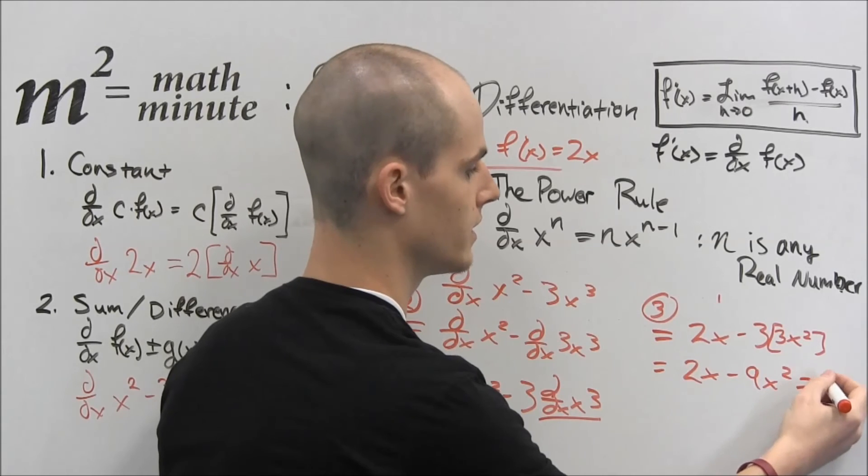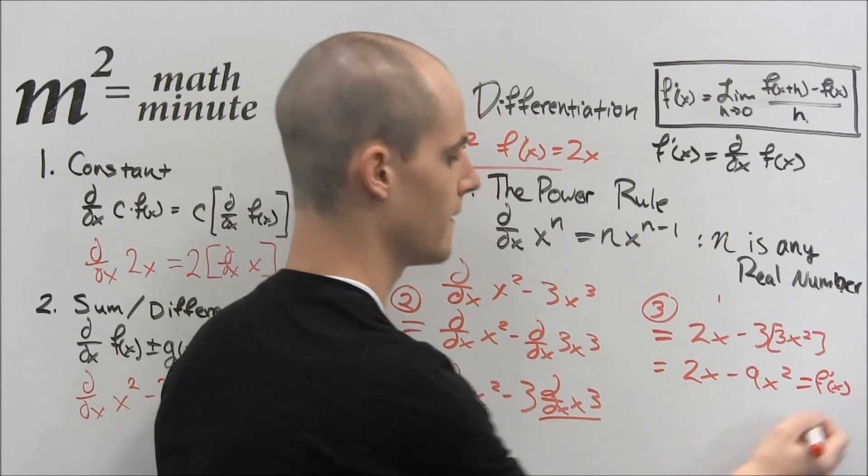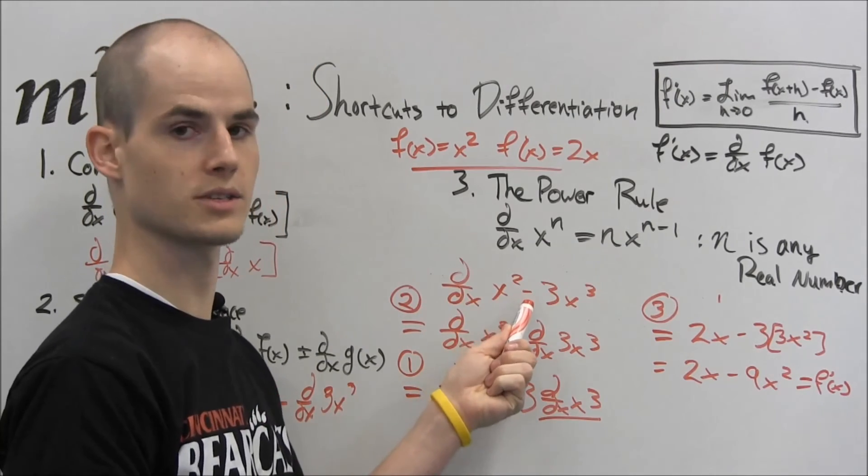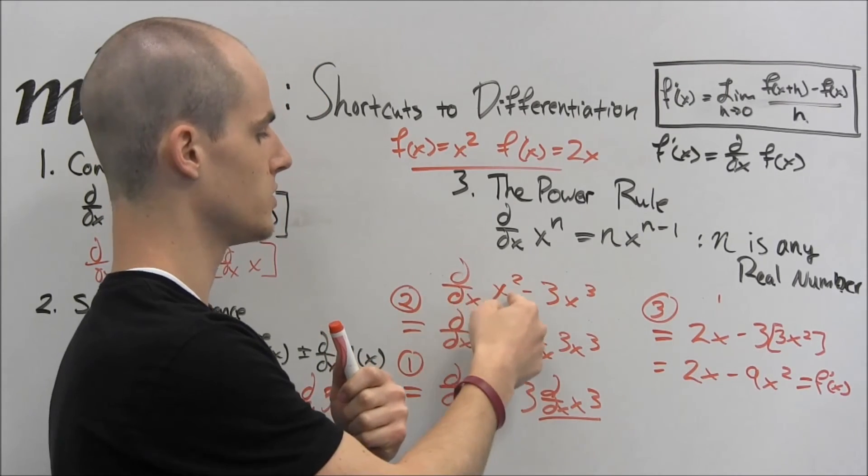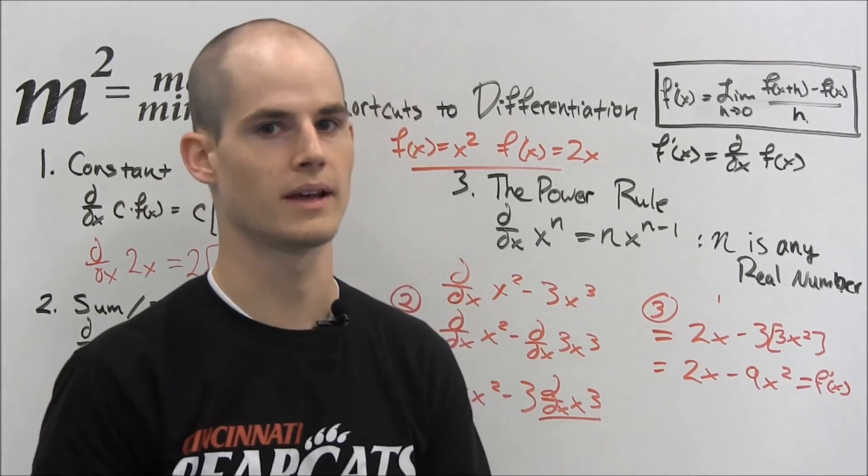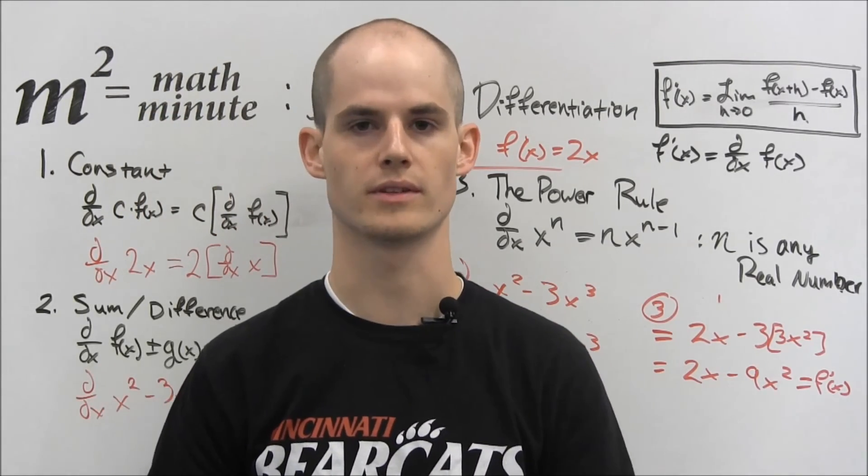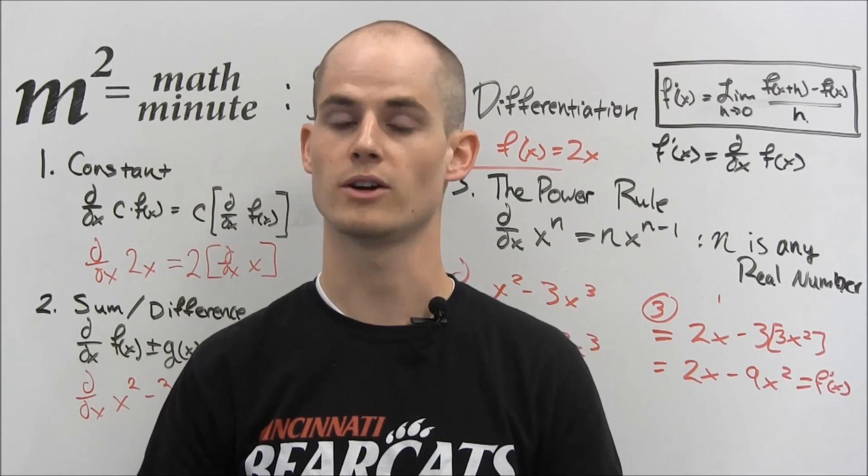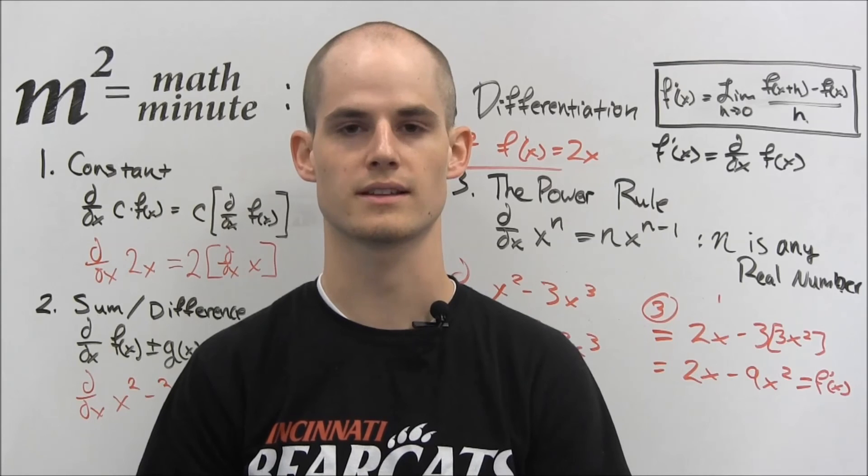So the final solution says that if f of x is x squared minus 3x cubed, then the derivative, f prime of x equals 2x minus 9x squared. And very soon you'll be able to look at this and just apply all those rules quickly. 2x minus 9x squared. So this is a really helpful method. This is just the first part of some of the derivative laws. And we'll get to the more difficult ones in the upcoming videos. But we hope this has been a good base for this and we'll see you next time.